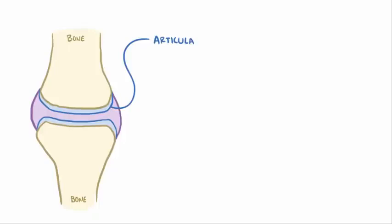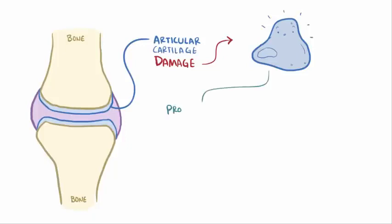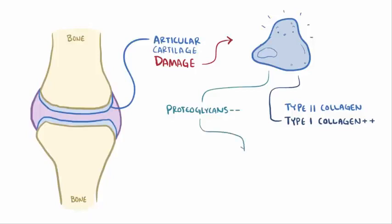Whatever the initial cause of articular cartilage damage is, it gets the chondrocytes to start trying to repair the cartilage. They initially start making less of the proteoglycans and more type 2 collagen, but soon switch over to making a different collagen type, type 1 collagen. Unfortunately, type 1 collagen doesn't interact with the proteoglycans in the same way, and there's this overall decrease in elasticity in the cartilage matrix, allowing it to break down.